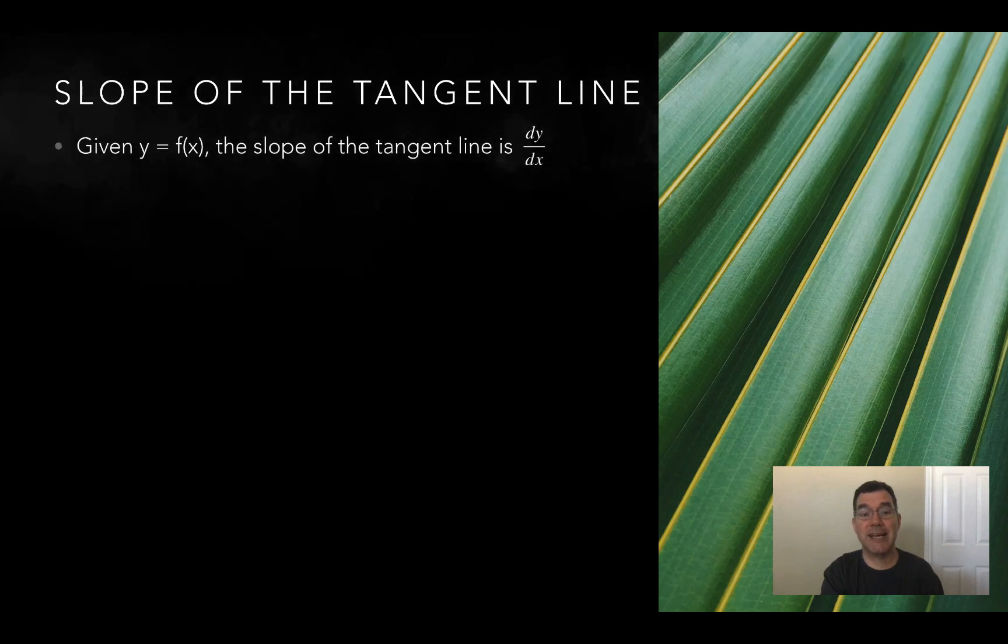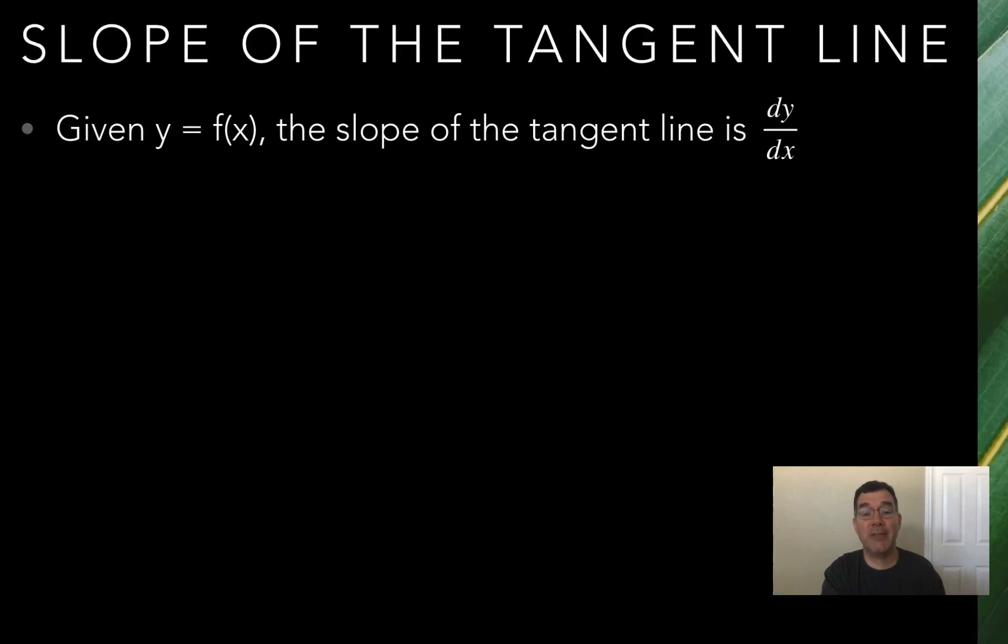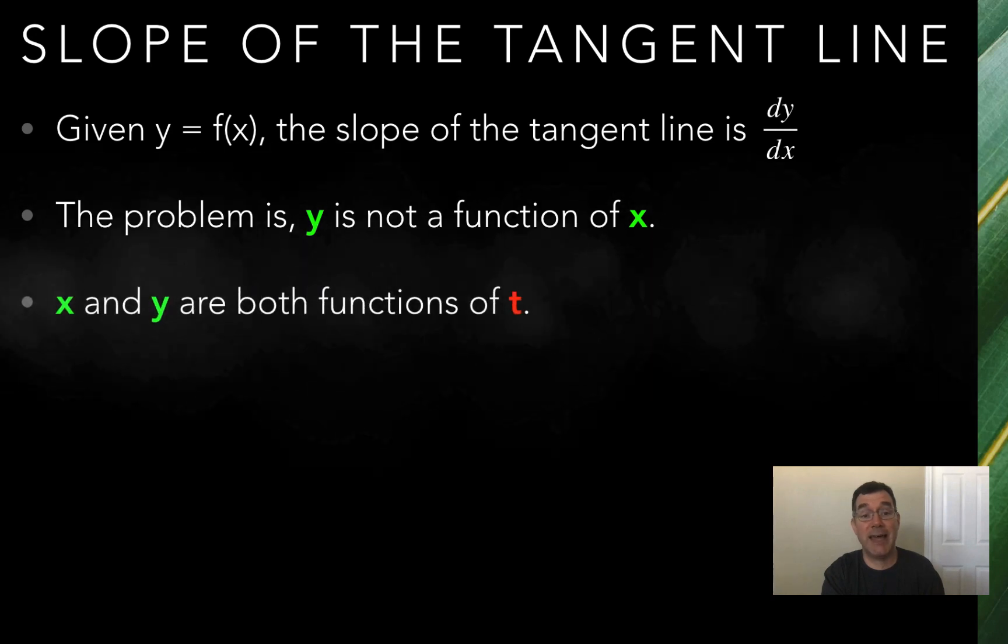First of all, let's talk about the slope of a tangent line. Now normally when we found that, we calculated dy dx, and that gave us the slope of every tangent line. But the problem is, y is not expressed in terms of x.